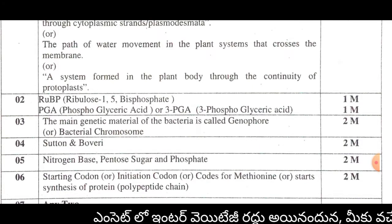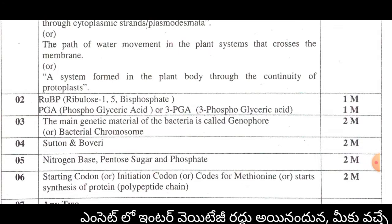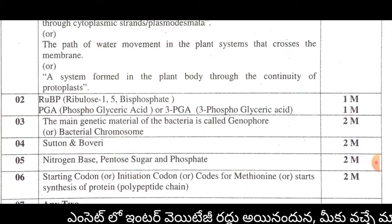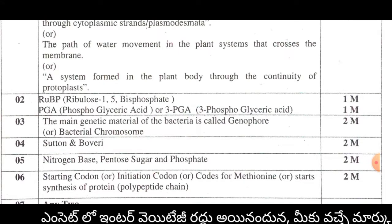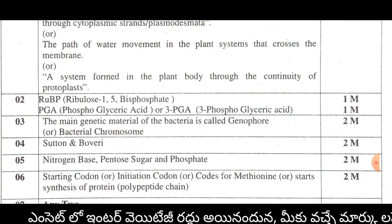The fourth question: the chromosome theory is associated with Sutton and Boveri. This answer is worth 2 marks.